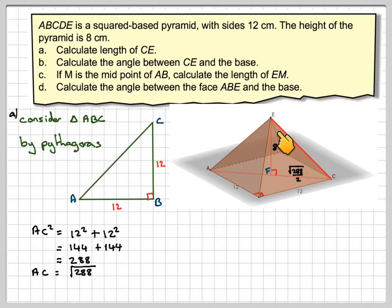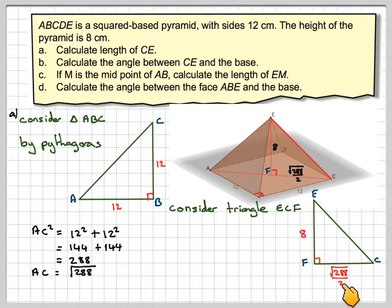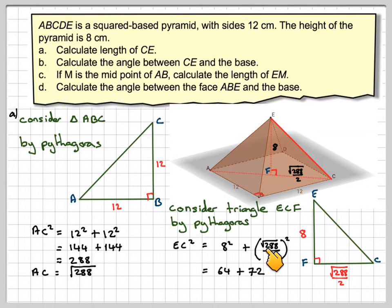Now using this triangle here, so consider the triangle ECF. This is the square root of 288 over 2. This is 8, taking off from this diagram. And what I need to do is calculate this length here. So again, using Pythagoras' theorem, EC squared is going to be 8 squared plus square root of 288 over 2 all squared. Now this looks quite complicated, but it isn't in reality. This is going to be 64, and this one is now 72. The square root of 288 squared is 288, and 2 squared is 4. 288 divided by 4 gives me 72. 64 plus 72 is 136. But in order to find EC, I need to take the square root of that, which gives me 11.661, which is 11.7 centimeters.